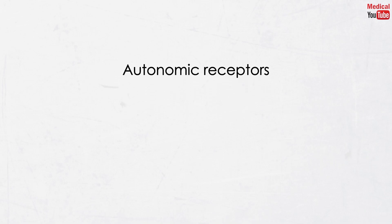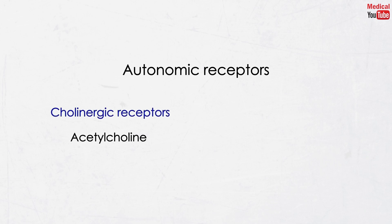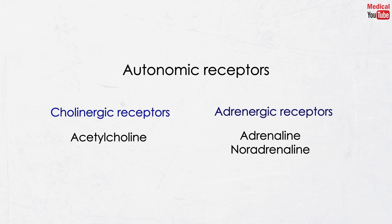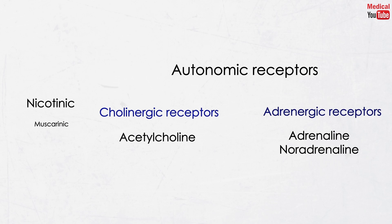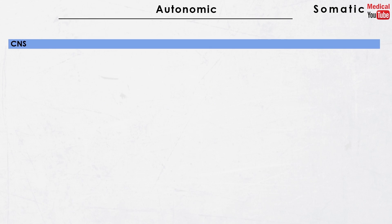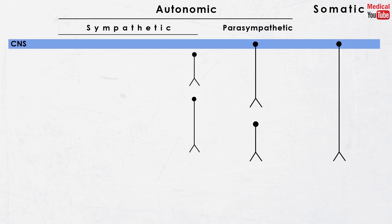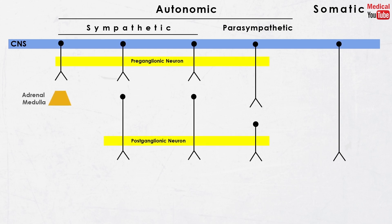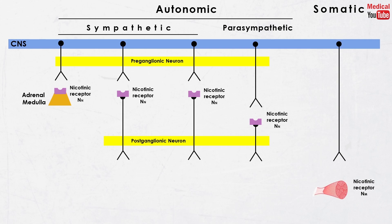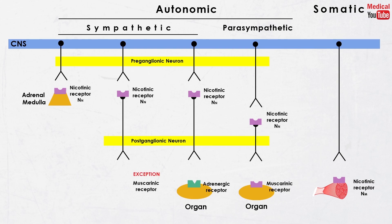Autonomic receptors are divided into two main categories: cholinergic receptors, activated by acetylcholine, and adrenergic receptors, activated by adrenaline and noradrenaline. Cholinergic receptors are divided into nicotinic and muscarinic receptors. Nicotinic receptors are further subdivided into nicotinic neuronal receptors located in the autonomic ganglia and adrenal medulla, and nicotinic muscular receptors located in the neuromuscular junction at the skeletal muscles. Muscarinic receptors are located at the synapse of all parasympathetic neurons at the effector organ. Adrenergic receptors are located at the synapse of all sympathetic neurons at the effector organ. The exception is that muscarinic receptors are also located at the synapse of the sweat glands in the sympathetic system.